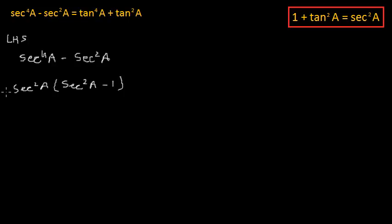Now I'll substitute 1 plus tan²a in place of sec²a. So this sec²a can be written as 1 plus tan²a, and this bracket can be written as sec²a equals 1 plus tan²a, and then we have minus 1.